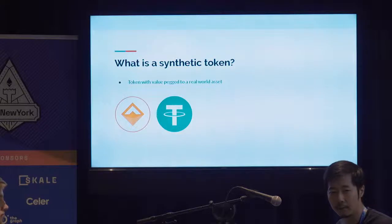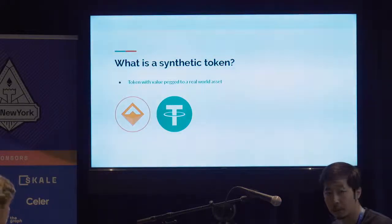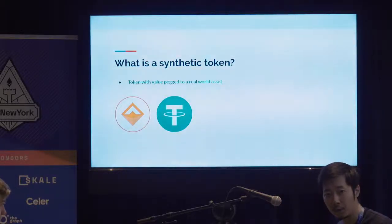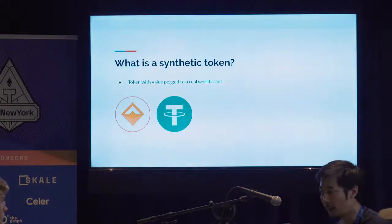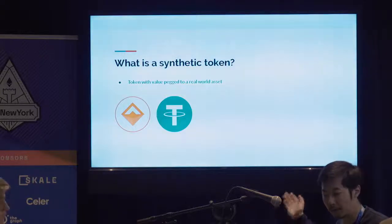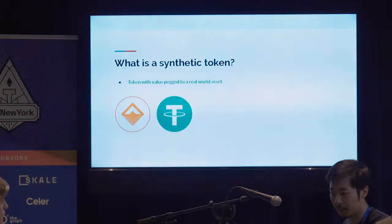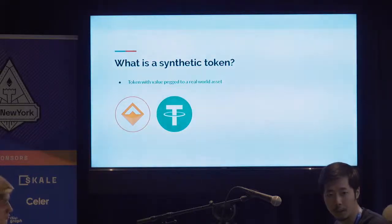An example would be an S&P 500 synthetic token, which just tracks the S&P 500 index. We already have some synthetic tokens according to this definition. DAI and Tether are probably the two most famous ones — they're both pegged to the U.S. dollar. Stablecoins are a subset of synthetic tokens, pegged to some relatively stable asset, useful as a medium of exchange or unit of account.